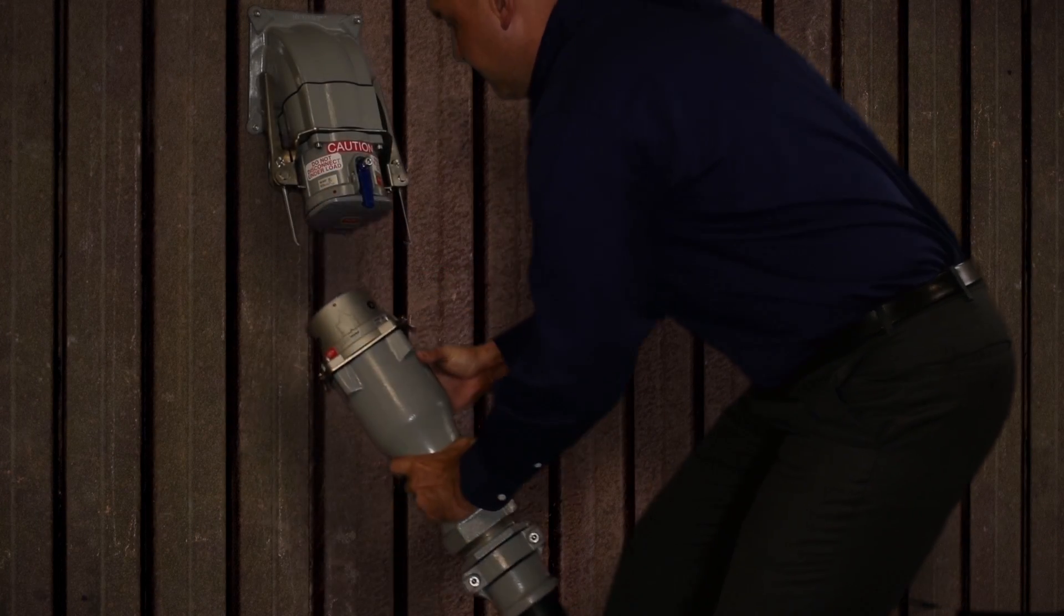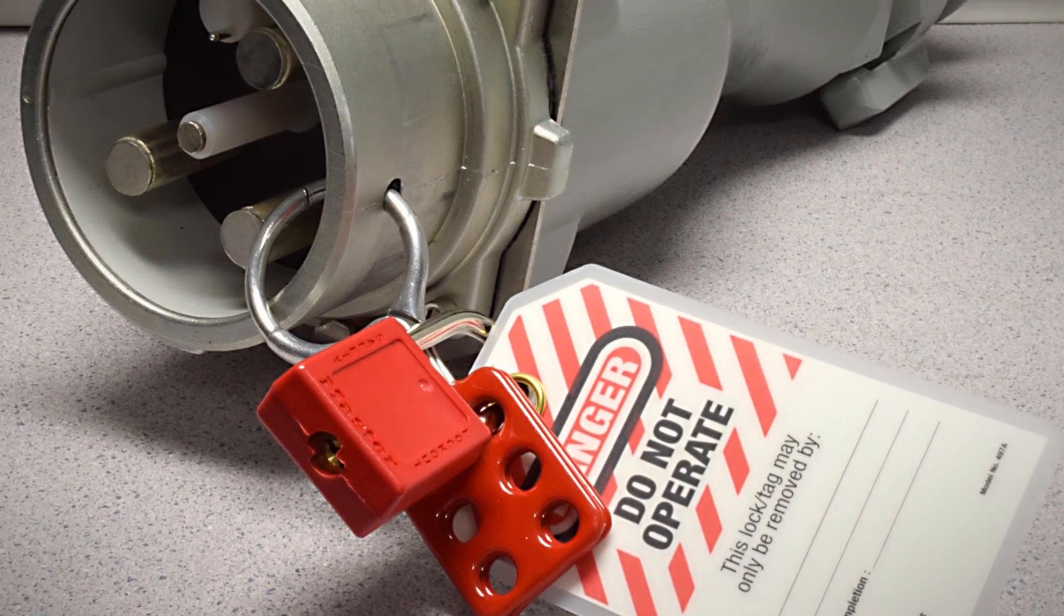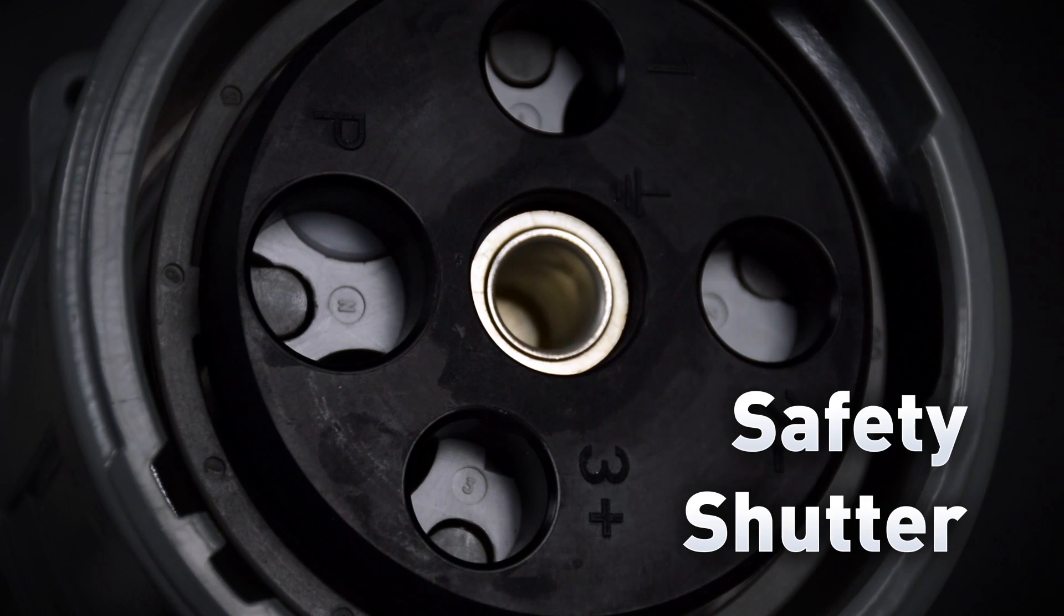Once the plug is removed, a lockout hole makes lockout-tagout easy. And a protective safety shutter on the receptacle protects workers from potential exposure to live parts.